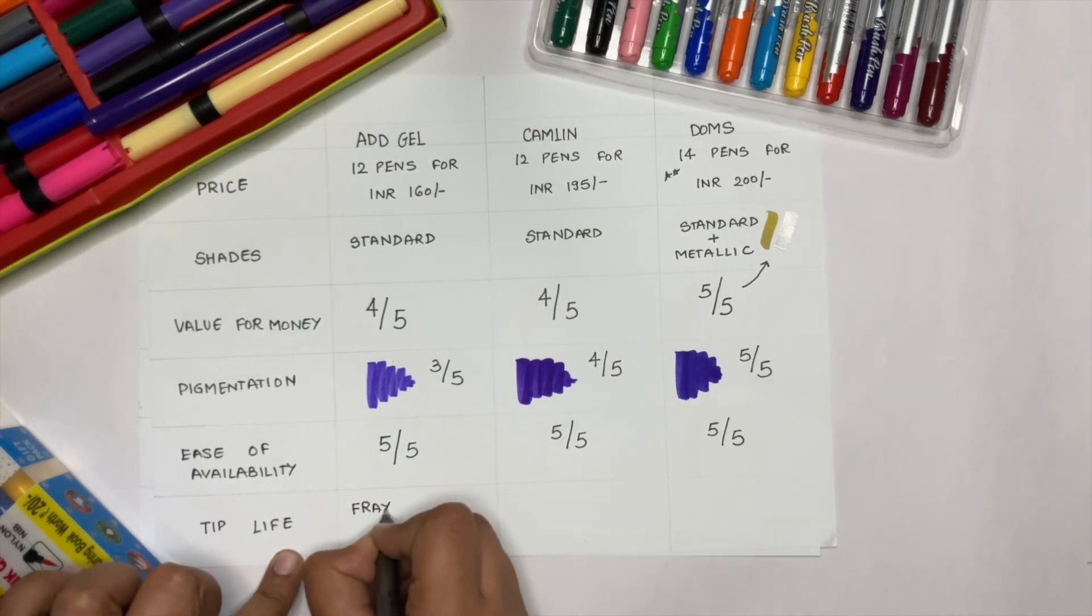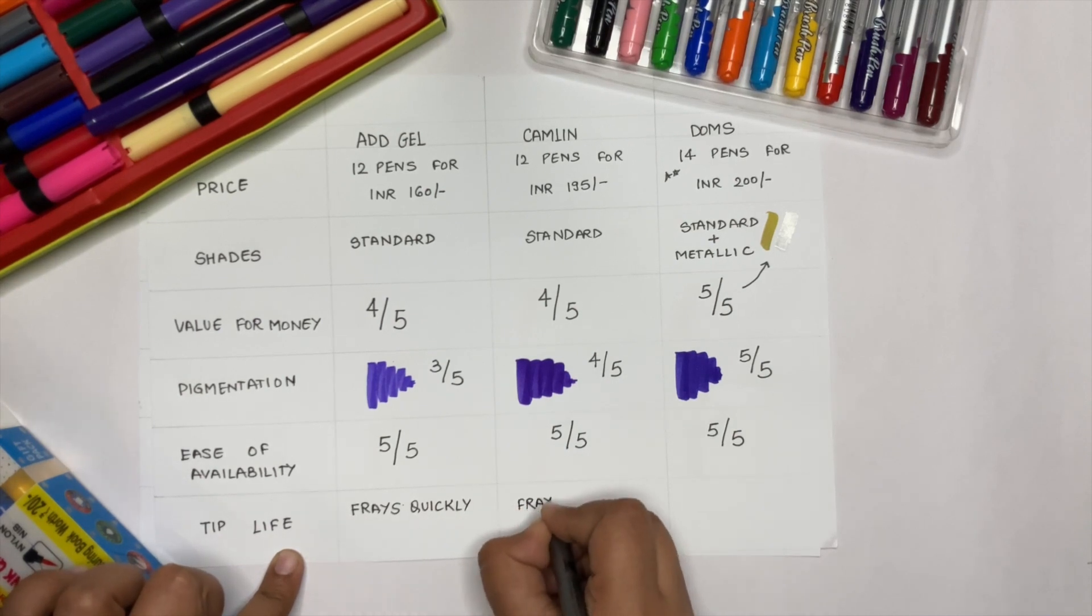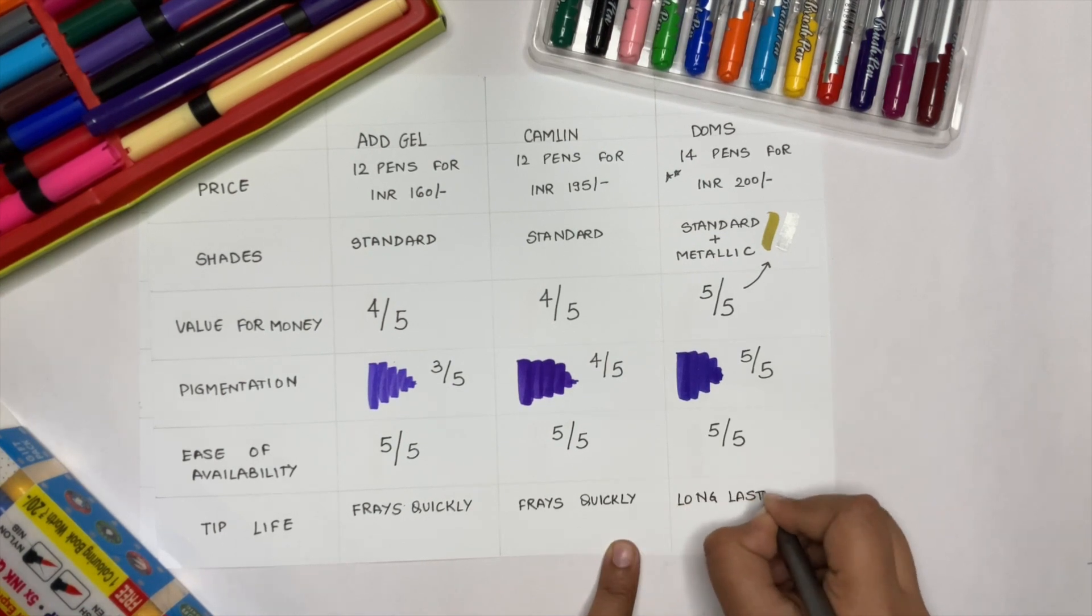ADD Gel and Camlin brush pens fray quickly as compared to DOMS brush pens. But then, because they are economical, you can easily buy them again for practice purpose.